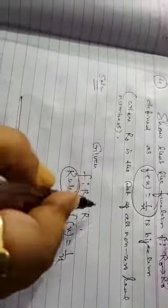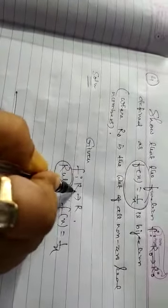See, in problem number 4, it is given that f(x) is equal to 1/x. The function is R₀ to R₀.